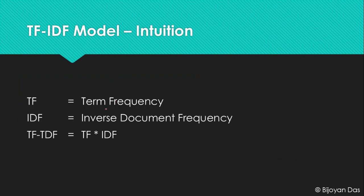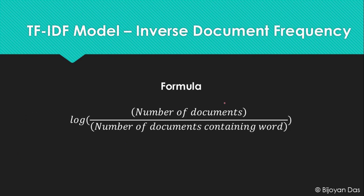Now that we have the term frequency, we need to find the inverse document frequency. The formula is: log base e of (number of documents divided by the number of documents containing the specific word). This formula shows that the IDF value for a word is fixed across the corpus — for a whole corpus of documents, a specific word has a single IDF value.